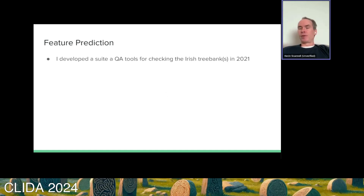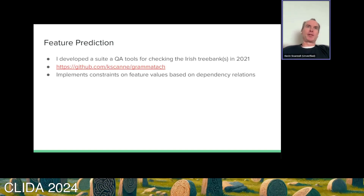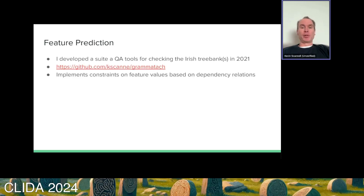As it happened, what I had done as part of a QA process for Teresa's treebank was to develop a suite of Python tools that essentially predict those feature values based on the dependency relations. That code is up online and open source. It's implemented in terms of constraints — saying things like: if a token is an adjective and it follows a feminine noun under certain constraints, then it should have the form equals lenition feature value. I implemented that for all of the possible features and all of the possible feature values. It was done originally as a QA tool, but it turned out to be really useful for the problem at hand — good fortune and good synergy.